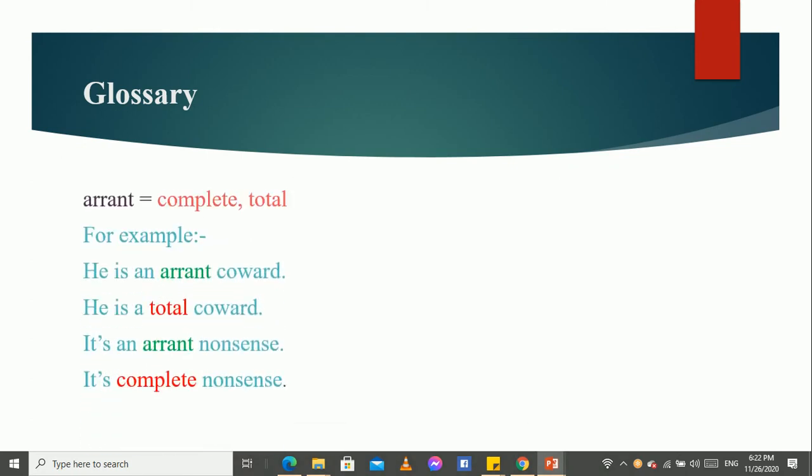Third one is arrant - complete or total. For example, he is an arrant coward. Here, in the place of arrant, we can use total. So, what it becomes? He is a total coward.